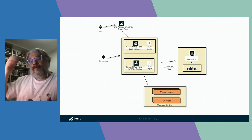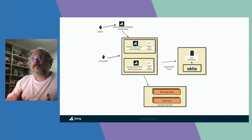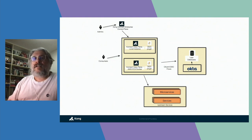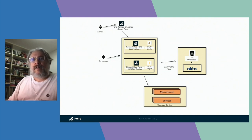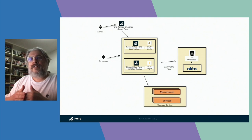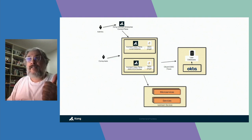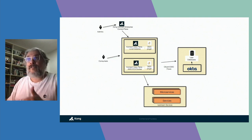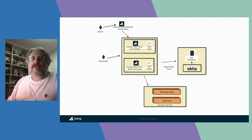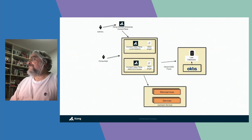All four grants: client credentials, authorization code, password, and implicit. I'm going to show you the two main ones. The document I'm going to share with you describes how to implement the two main ones — client credentials and authorization code — using Okta as the identity provider.